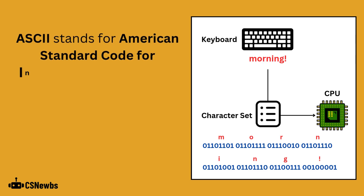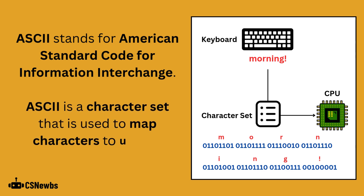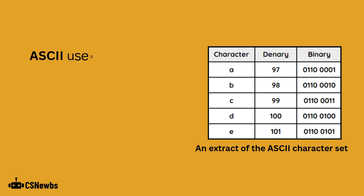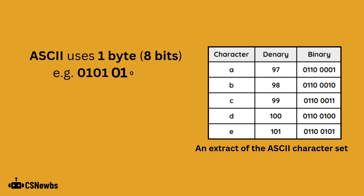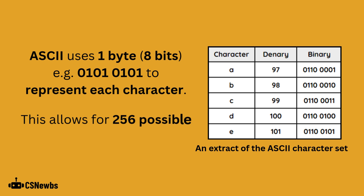ASCII stands for American Standard Code for Information Interchange. ASCII is a character set that is used to map characters to unique binary values. ASCII uses one byte, which is 8 bits, to represent each character. This means that ASCII can represent a total of 256 different characters.